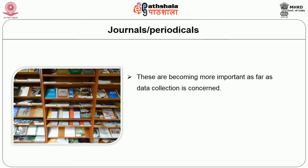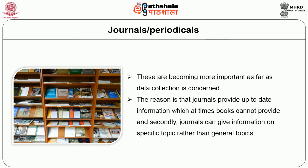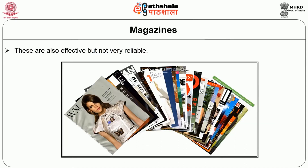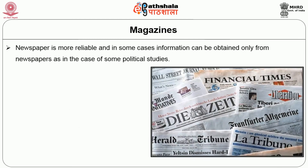Journals and periodicals are becoming more important as far as data collection is concerned. The reason is that journals provide up-to-date information which at times books cannot provide. Secondly, journals can give information on specific topics rather than general topics. Magazines are also effective but not very reliable. Newspapers are more reliable, and in some cases information can be obtained only from newspapers, as in the case of some political studies.